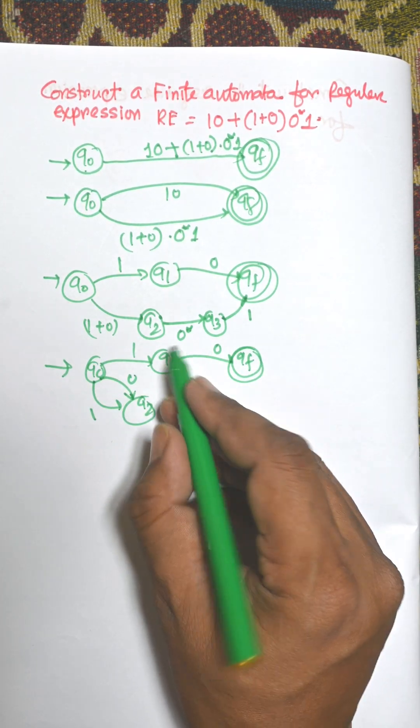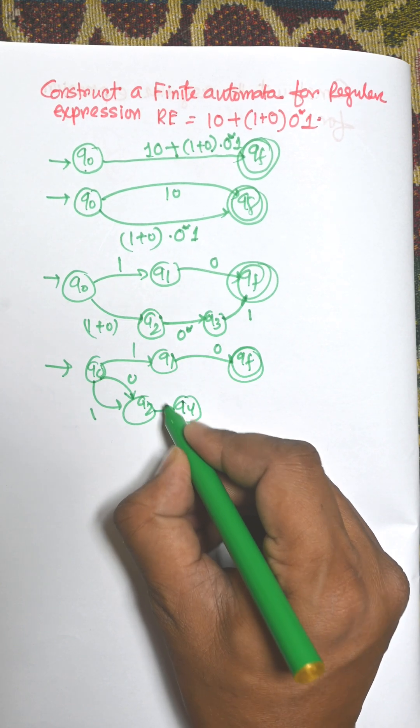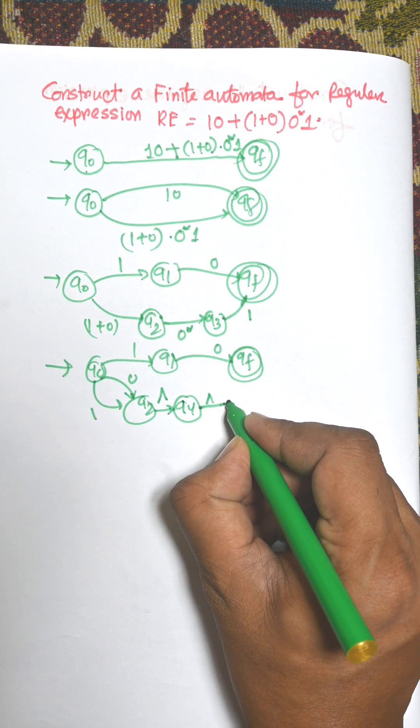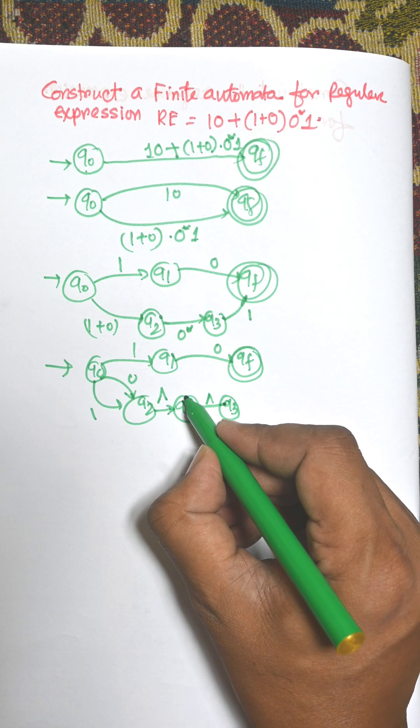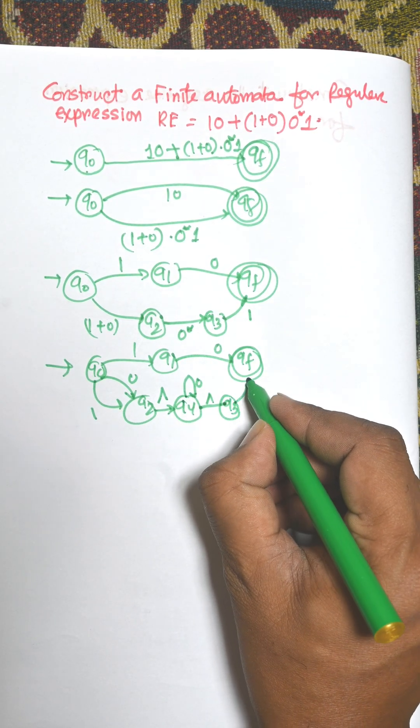For 0 star we need to add another state, that is q4, and we need to put empty transition. And q4 to q3 there is another empty transition, and 0 will be rotated again and again. There is a self loop and from q3 to 1.